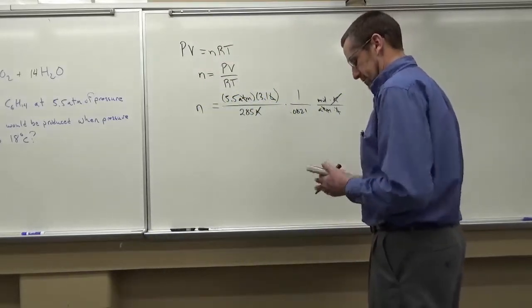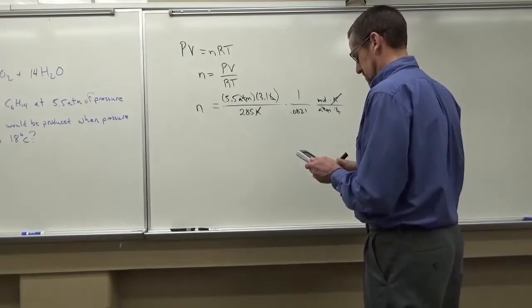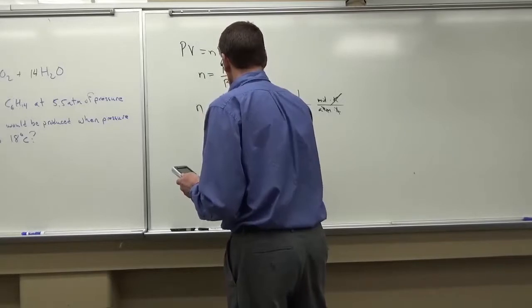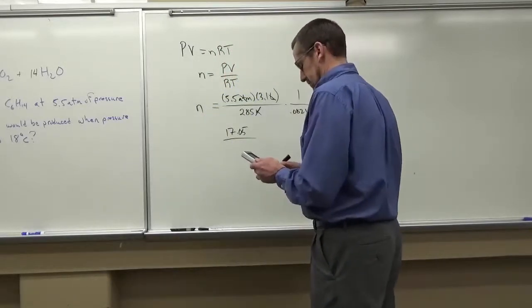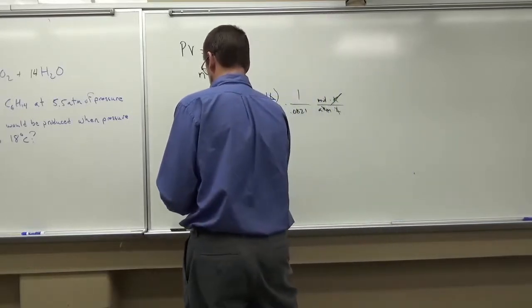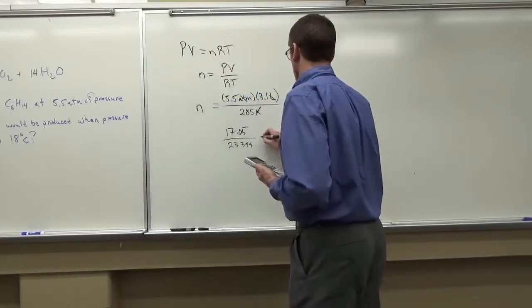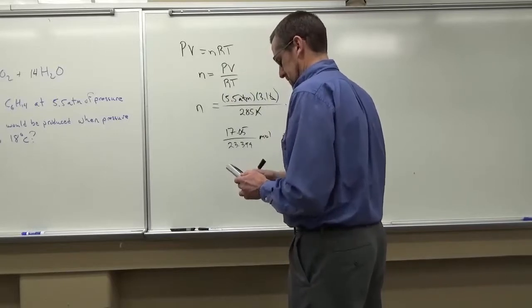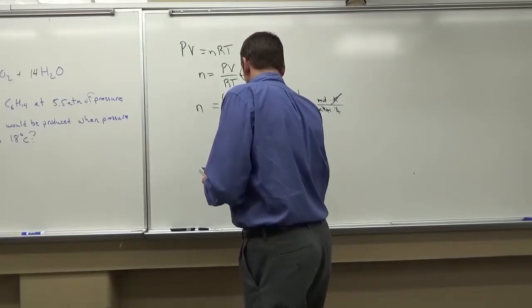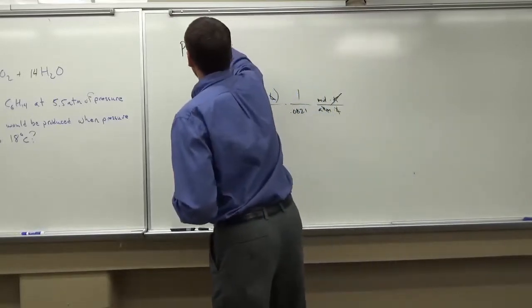Alright, I'm just going to do the math. 5.5 times 3.1. So that's 17.05 divided by 23.399. And that's moles. So that works out to be 0.729 moles. Alright, so you've got that down up here.